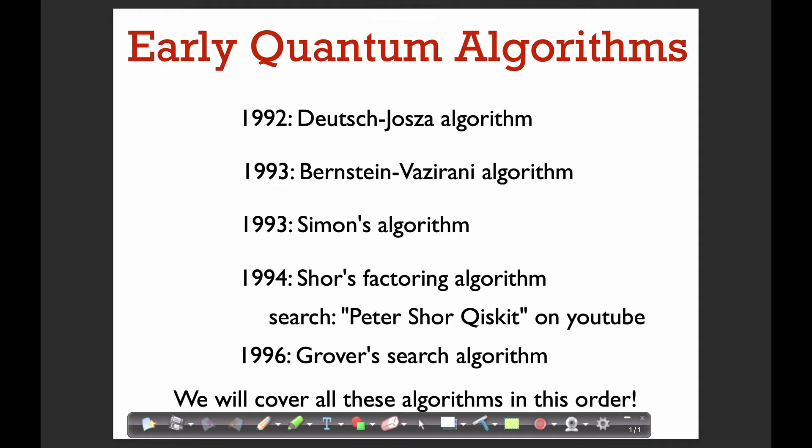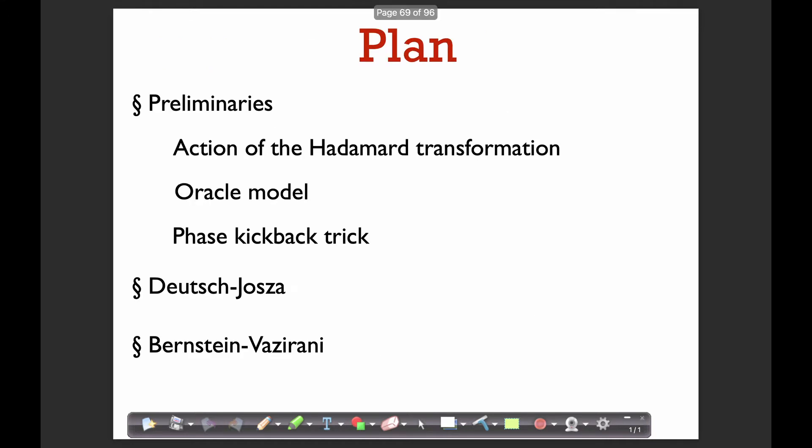Grover's search algorithm is a little bit different, and we're going to talk about that after the others. For today, the plan is: first, we're going to review the action of the Hadamard transformation, which plays a very important role in all of these early algorithms. Then we're going to talk about the oracle model, something called the phase kickback trick, and then we'll go over both Deutsch-Jozsa and Bernstein-Vazirani algorithms.